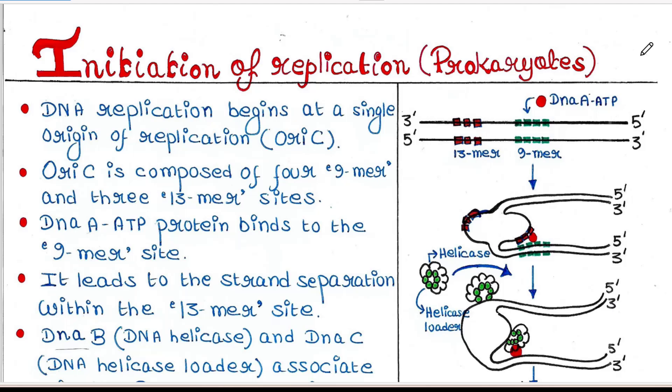DNA replication begins at a specific site, the origin of replication, or OriC. This is a single site. OriC is composed of four 9-mer and three 13-mer sites.